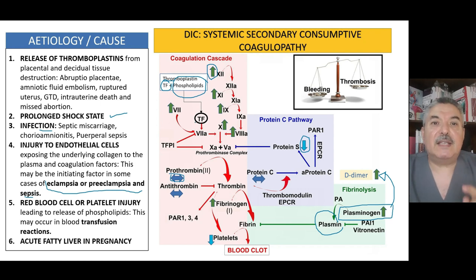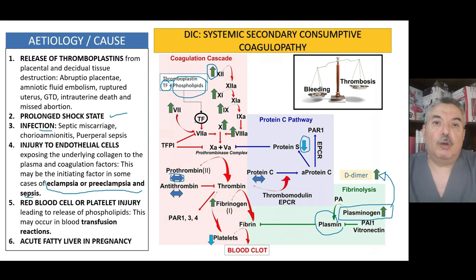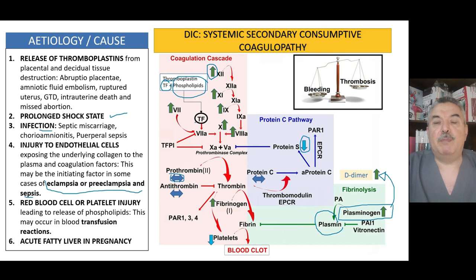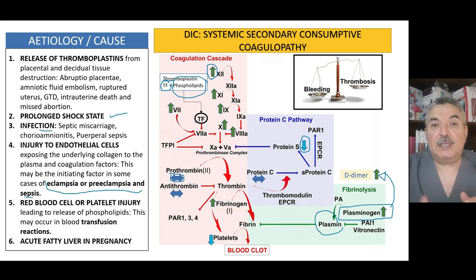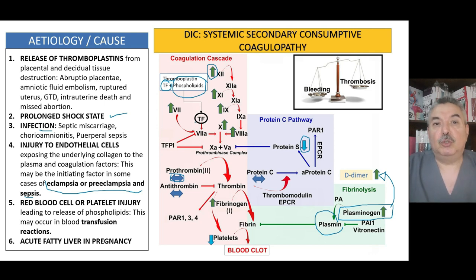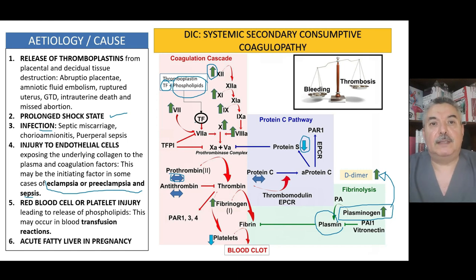Thromboplastin activates the extrinsic and the common pathway. Partial thromboplastin — the phospholipids — will stimulate the intrinsic pathway and the common pathway. PT, PTT, and INR were covered in earlier sessions. By now you should understand the difference between PT, PTT, and INR.